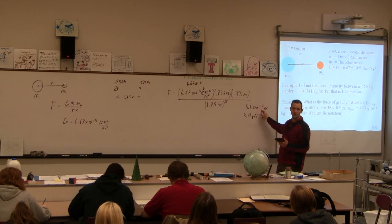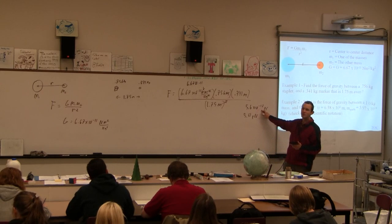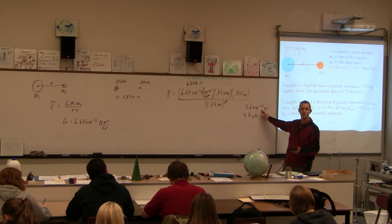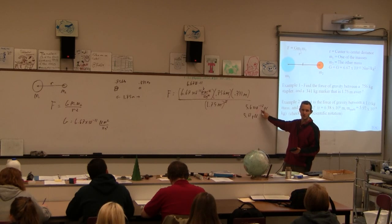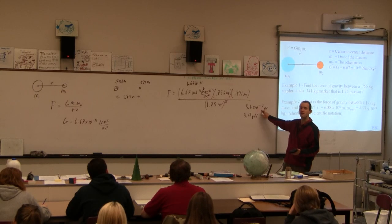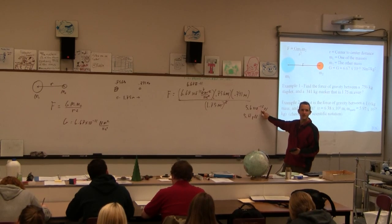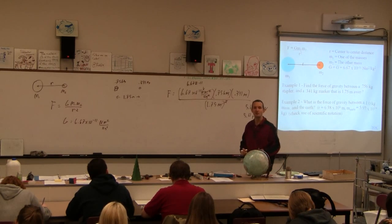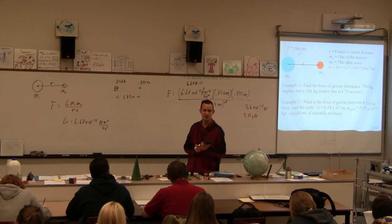So 10 to the minus 12 is piconewtons. What's 10 to the minus 9th is nanonewtons, 10 to the minus 6 is micronewtons, 10 to the minus 3rd is millinewtons. I don't know which one is more pleasing. I think piconewtons is one of the better ones, isn't it? 10 to the 6th is meganewtons, 10 to the 3rd is kilonewtons.